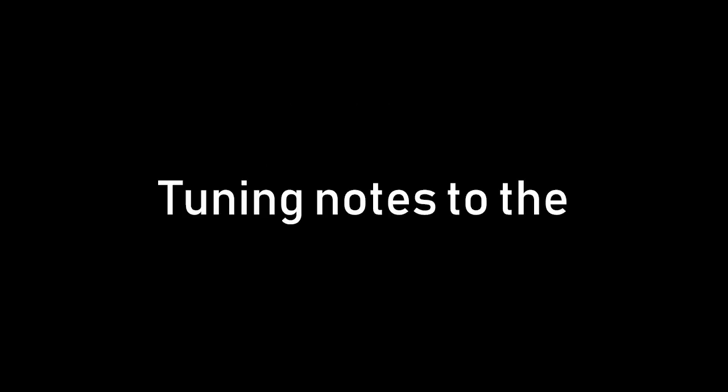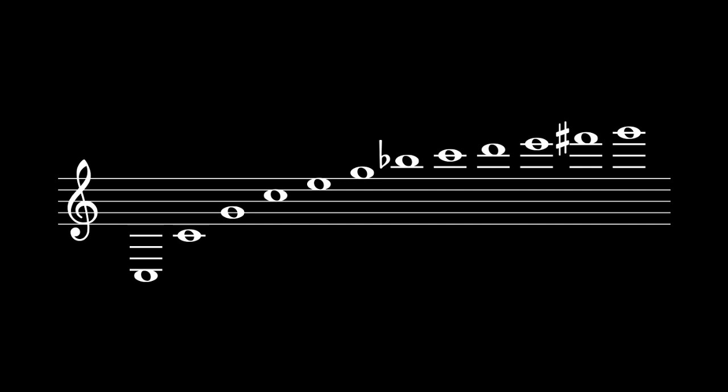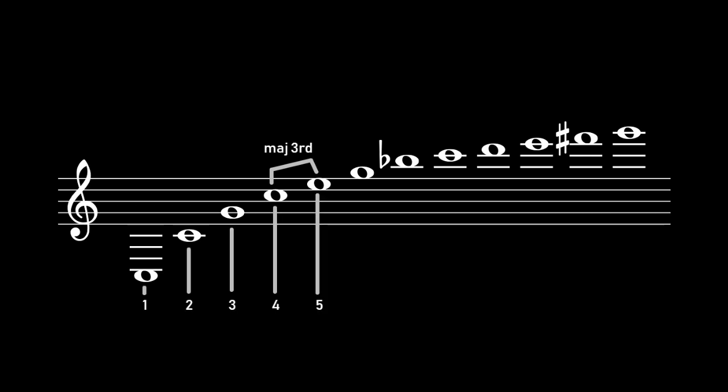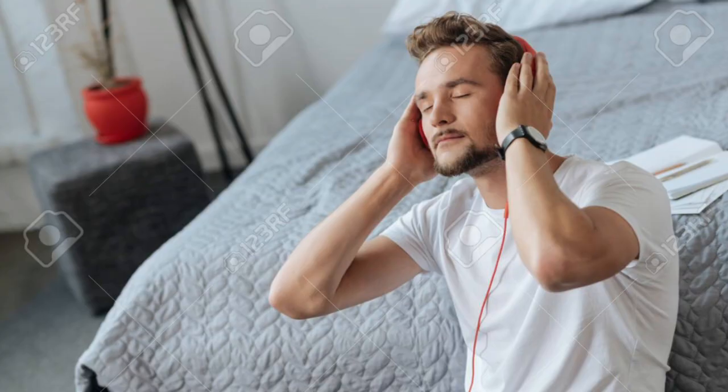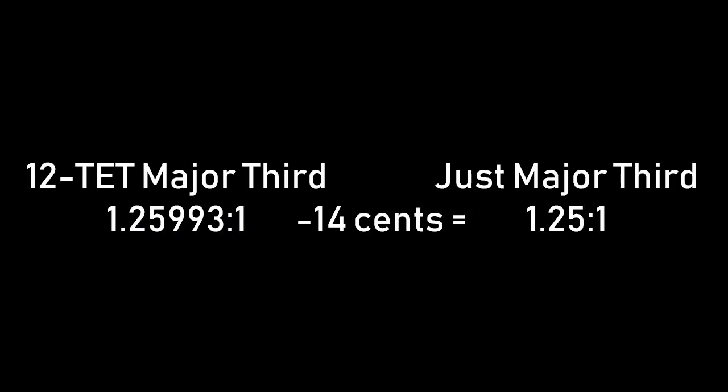Just intonation, as you might know, is tuning notes to the Harmonic Series. For instance, if you wanted to have a justly tuned Major Third, you look in the Harmonic Series for where a Major Third first pops up. The first place from the bottom where we find a Major Third is between the 4th and 5th Harmonics, so the Major Third assumes a 5-to-4 ratio. That ratio sounds very nice to our ears, but it's a bit flatter than the 12TET Major Third — by 14 cents to be exact.